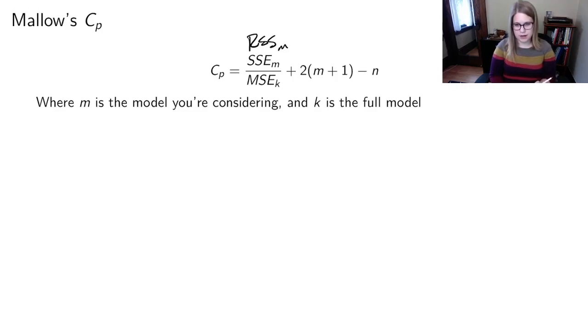So Mallow's CP, you want this to be a smaller number. Smaller numbers are better. And I'll just write this in. So this is the number of predictors, and this is the sample size.